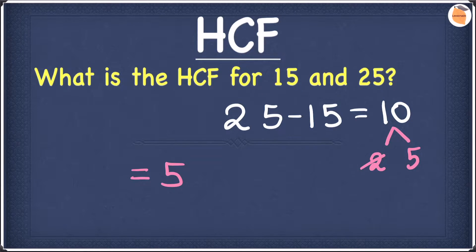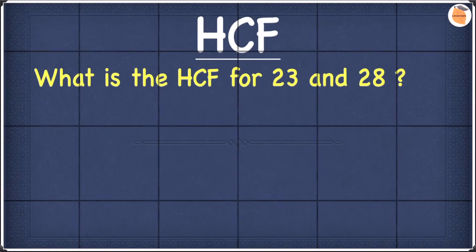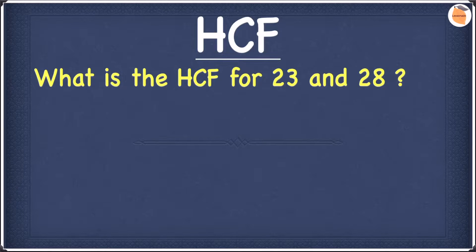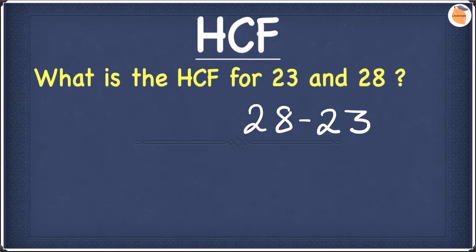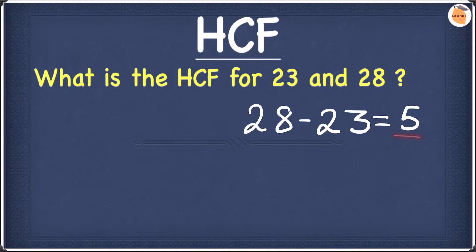I hope you understood everything so far. Now let's look at the third HCF trick. The example is: what is the highest common factor for 23 and 28? We find the difference — 28 minus 23 gives you 5. We check whether 5 is a factor of both 23 and 28 — it is not. So we find the factors of 5, which are 1 and 5. Since 5 does not work, we're left with 1. So the highest common factor for this example is 1.